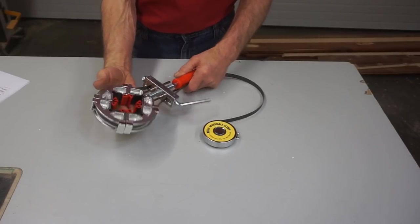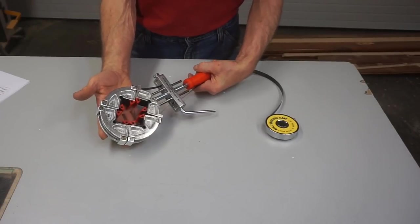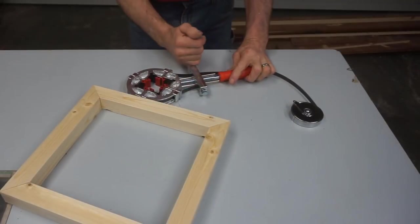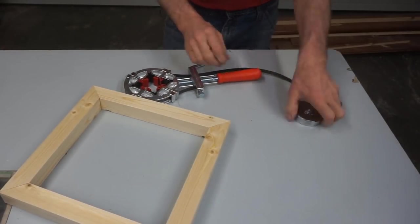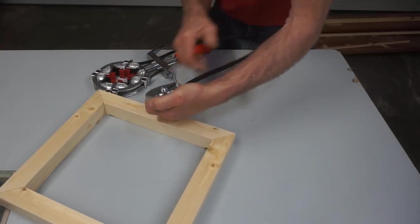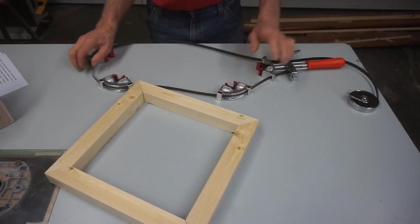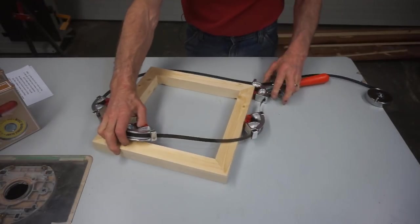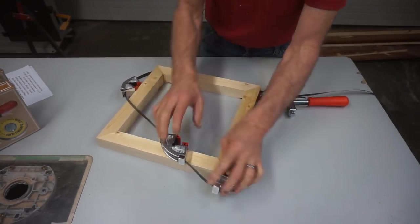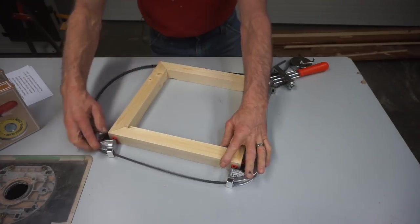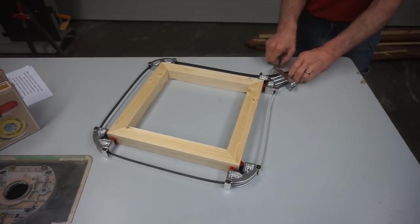Despite their unusual appearance, using these clamps is pretty straightforward. Just loosen this rough adjustment handle, and pull out enough steel band to make it around the frame you're working on, and then wiggle the corner pieces into place, and then snug up the handle with a twist.